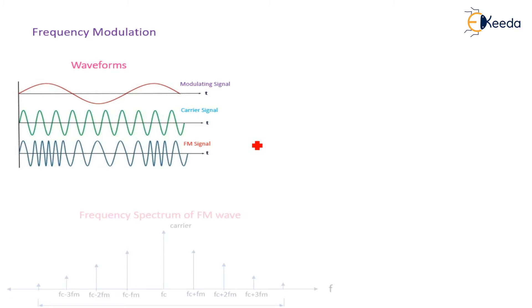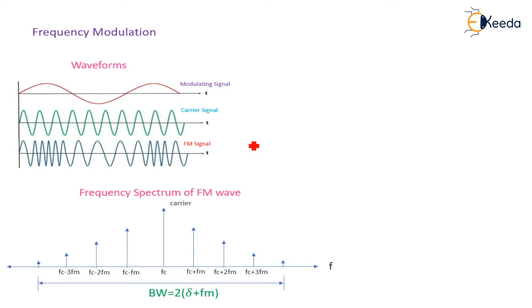Now, the output of this FM wave, we will see that more and more number of sidebands are present. So it can be observed in the frequency spectrum of FM wave. Here, the carrier is placed at the center and we will see that more and more number of sidebands.